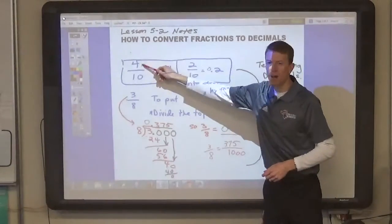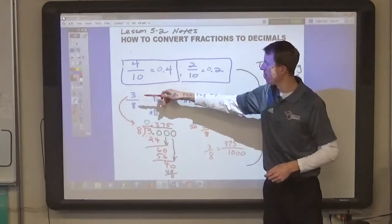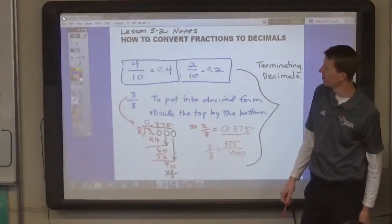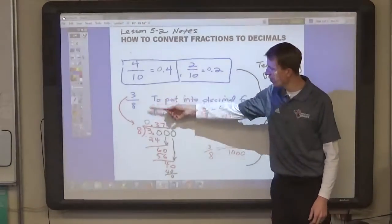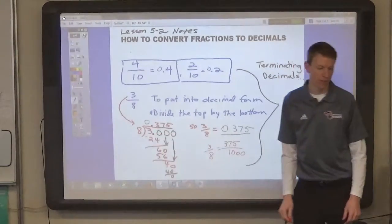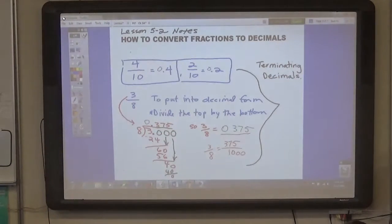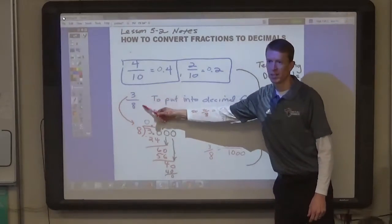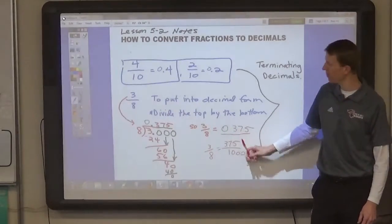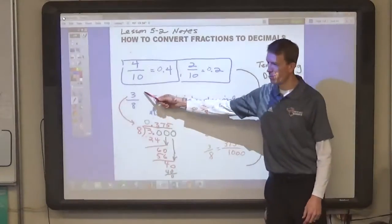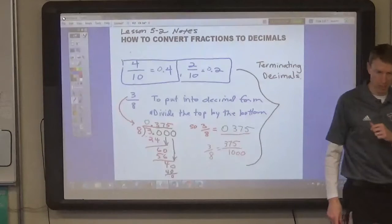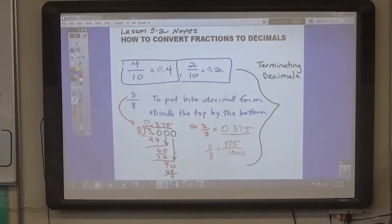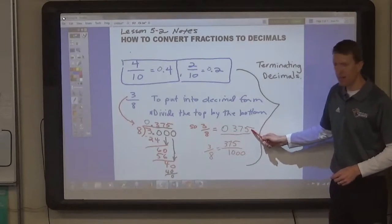Now, when you're converting fractions to decimals, you start with the top number and divide it by the bottom number. The top number, the numerator, always goes inside the fraction bar. And, if the top number is smaller, the decimal is going to be less than 1. If the top number is bigger, then the decimal is going to be greater than 1.